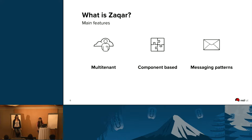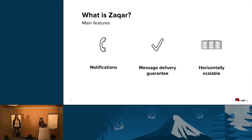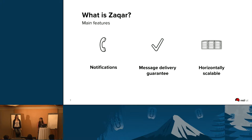SACAR's main features are that it's multi-tenant. It works with Horizon to provide authentication and uses Keystone IDs to find queues and messages. It's component-based, so you can add different transports and different back-end storages, and it has different messaging patterns. SACAR provides notifications, it also has a message delivery guarantee depending on your deployment and how you set it up, and it is horizontally scalable.